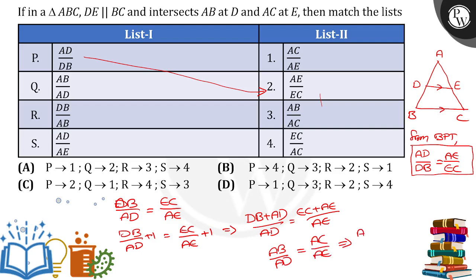Again, if I make it reverse, I will get AD by AB is equal to AE by AC. So, see the second one. What I have? AB by AD is equal to AC by AE. AC by AE, in that sense, Q option will go to 1.